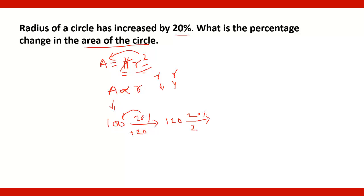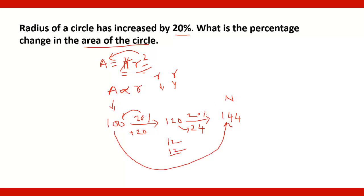Now again it is increased by 20% because it is r squared, not just r. So 20% of 120: 10% is 12 and another 10% is 12, giving 24. So 120 plus 24 equals 144. The new area is 144, meaning for 100 it is 144 — so there is a 44% increase in the area.